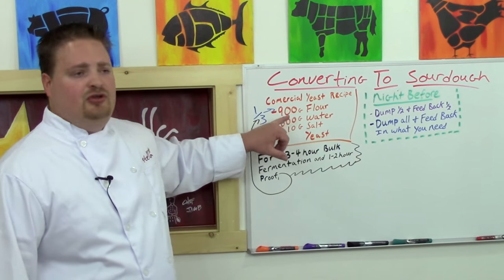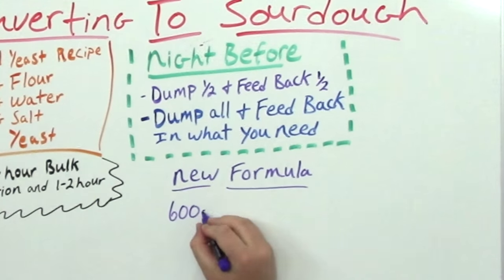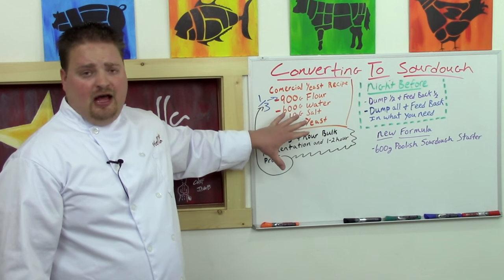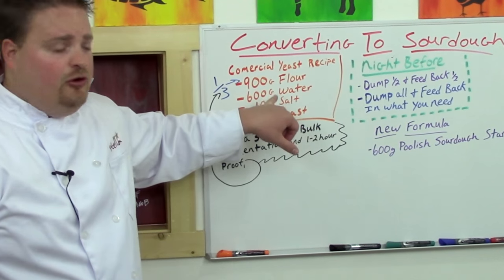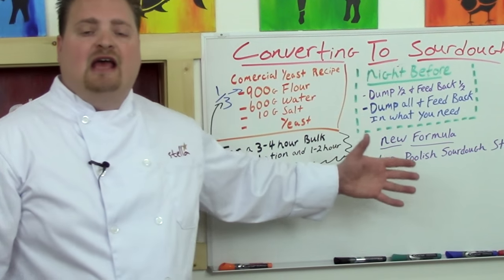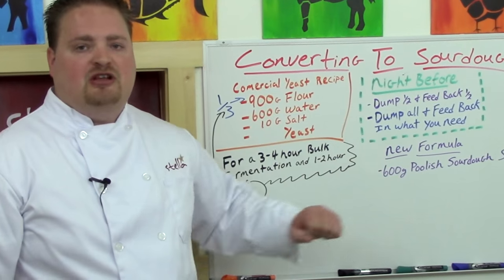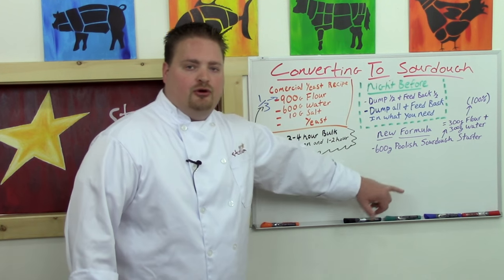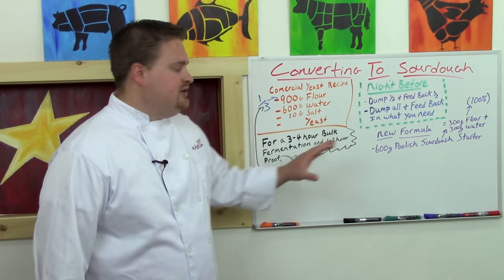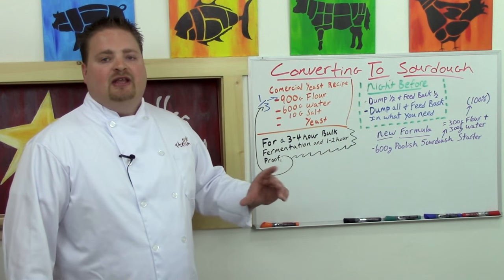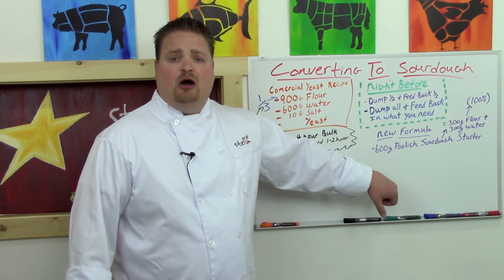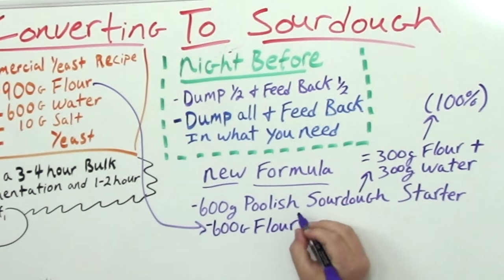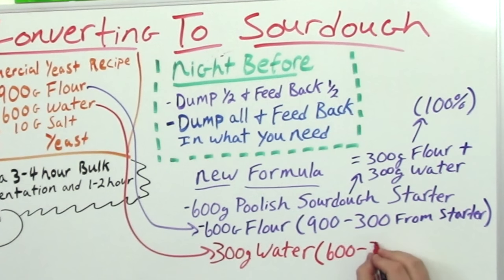Our new formula: because we're using a poolish sourdough starter, let's write down the poolish amount first, which is going to be 600 grams. Because we're using a poolish sourdough starter and we want 300 grams of our flour to come from our starter, we know we're gonna need 600 grams of poolish because a poolish is 100% hydration. So in this 600 grams of poolish sourdough starter, we're gonna have 300 grams of flour and 300 grams of water.